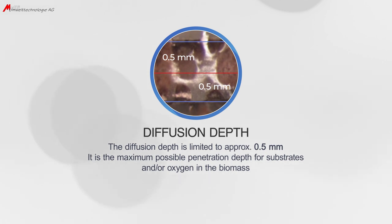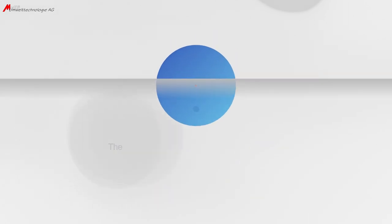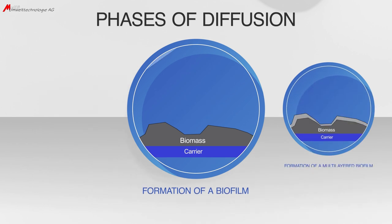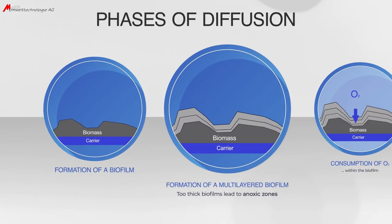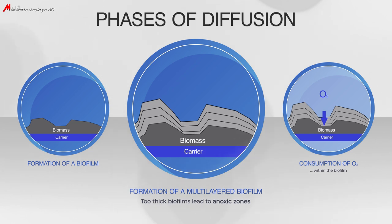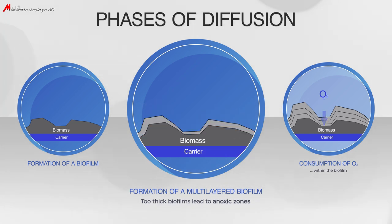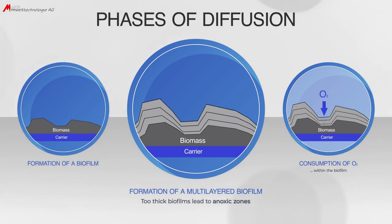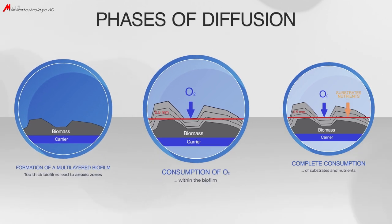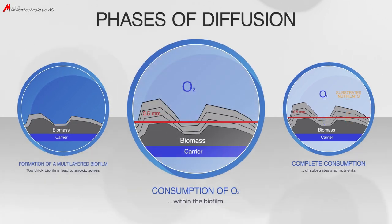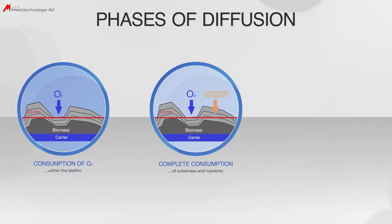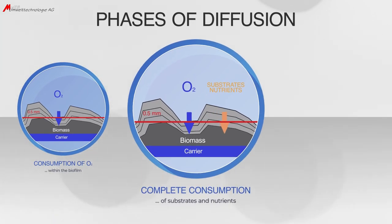There are different phases of diffusion. The first one is the formation of a biofilm on the carrier surface, then the biofilm gets thicker. However, if the biofilm layers are getting thicker than 0.5 mm, it leads to the development of inactive anoxic zones in the deeper layers, which will not contribute to the metabolism process anymore. As a consequence, these anoxic zones only reduce the available active surface area and active biomass, and in turn lower the removal performance.